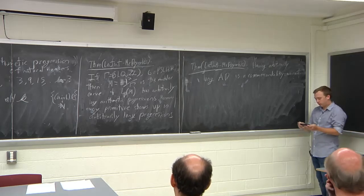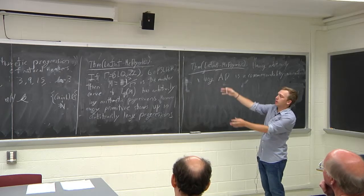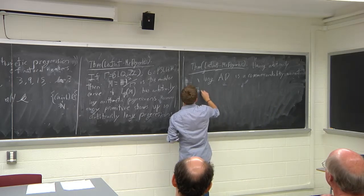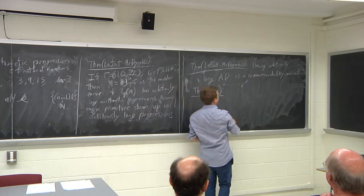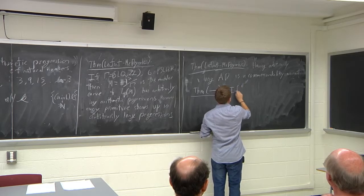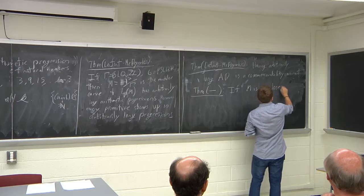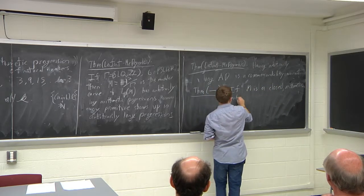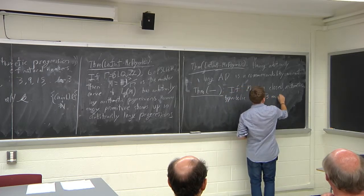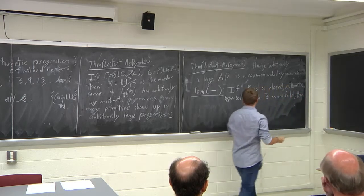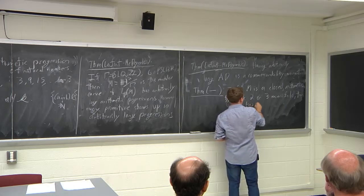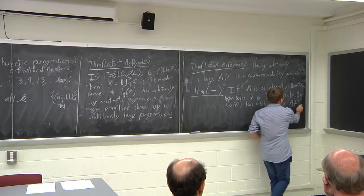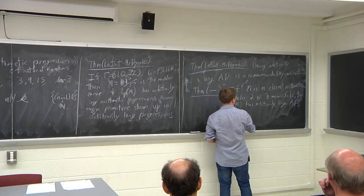The context of just SL₂ℤ is a fairly limited single commensurability class. But it's actually more generally true: if M is a closed arithmetic hyperbolic two or three manifold, then L_P(M) has arbitrarily long arithmetic progressions, and moreover every primitive length shows up.